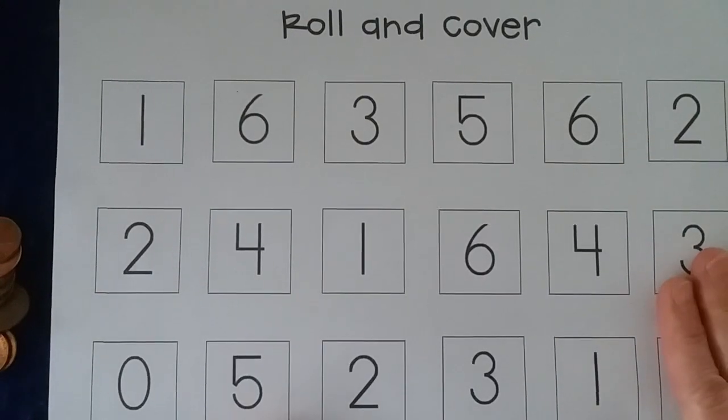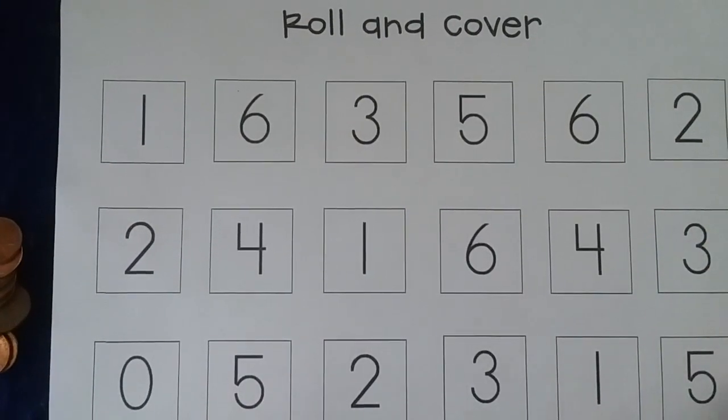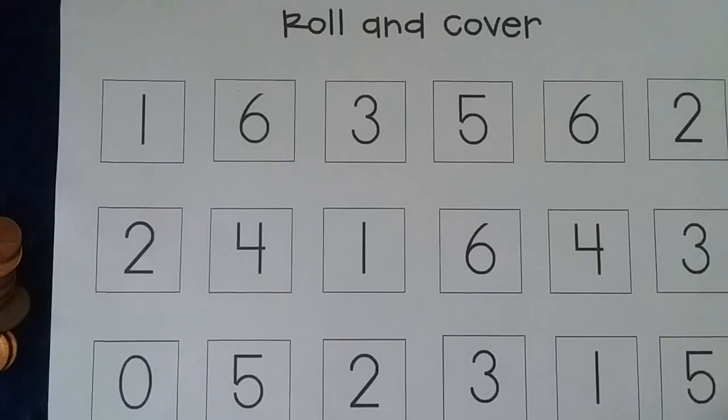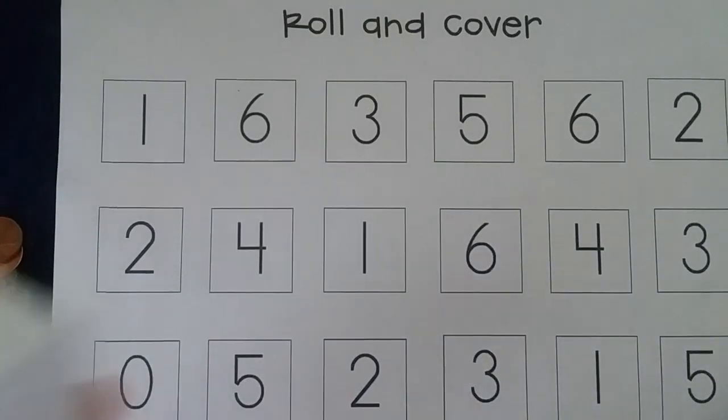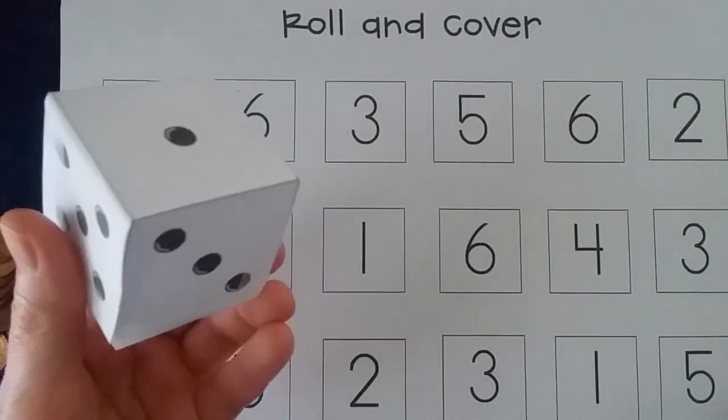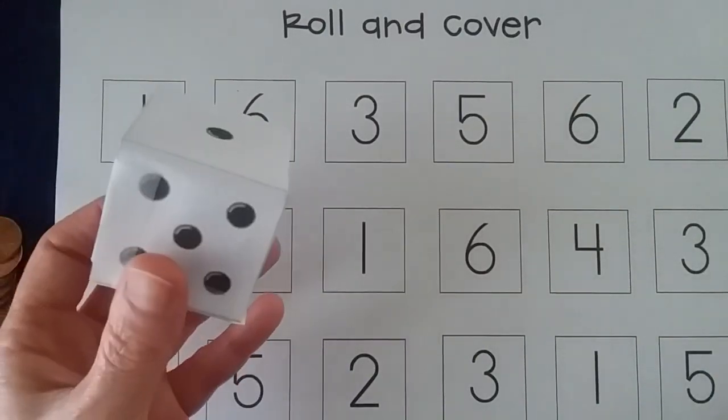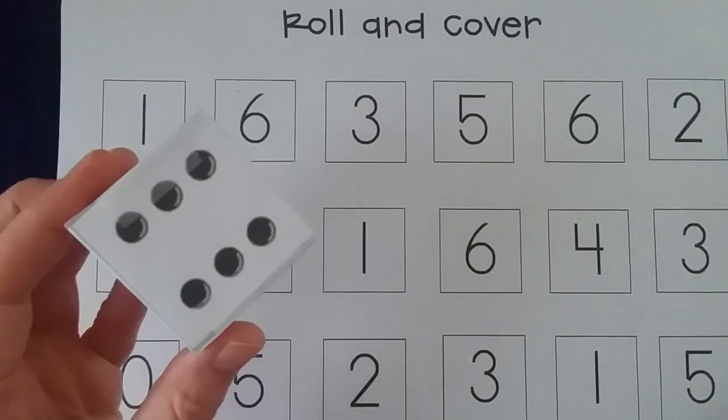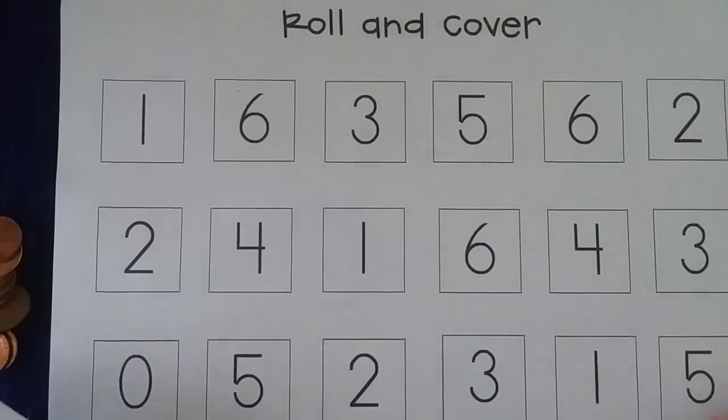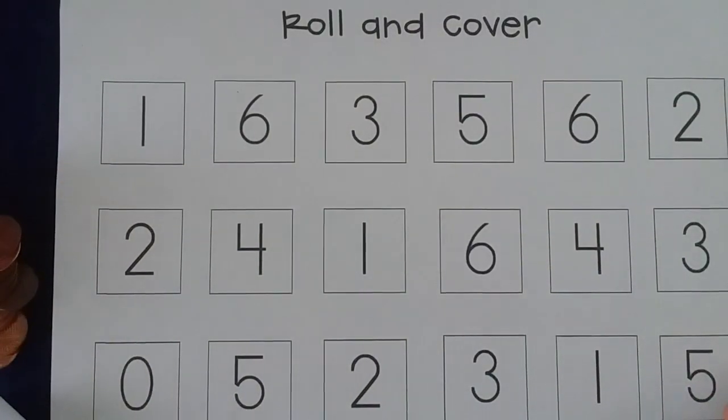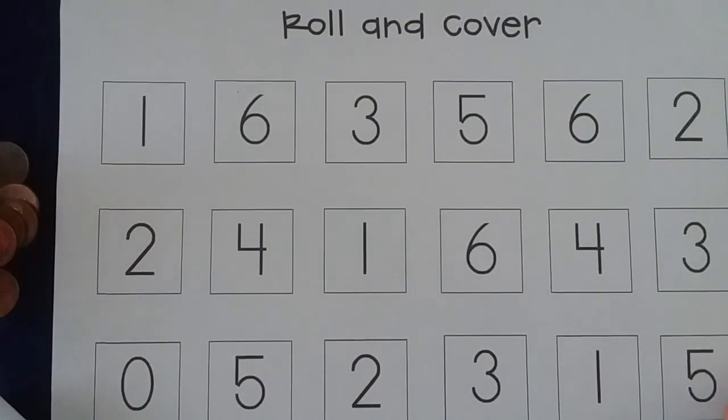So what you need is this sheet which we've provided. You also need one die with dots. I didn't have one so I made this die out of paper which is also attached to the document that will go with the game, and you need some counters.